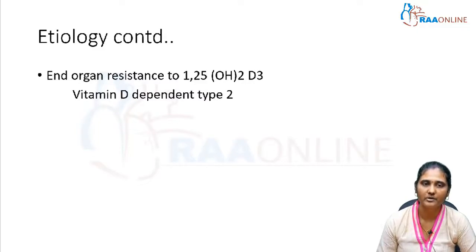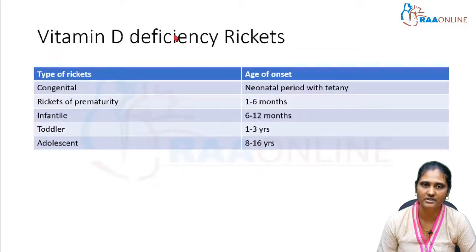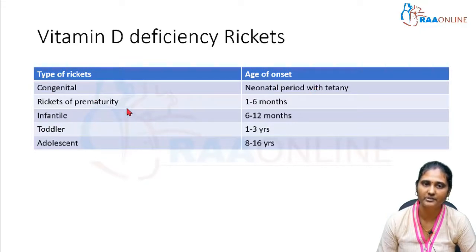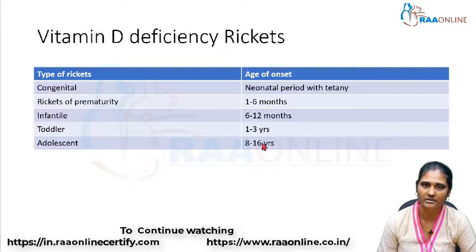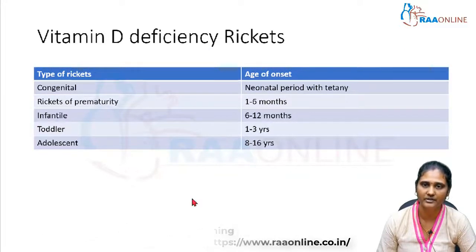Based on age of onset, vitamin D deficiency rickets is classified as: congenital rickets from the neonatal period, rickets of prematurity in the initial 6 months, infantile rickets from 6 to 12 months, toddler rickets between 1 to 3 years, and adolescent rickets at more than 8 years.